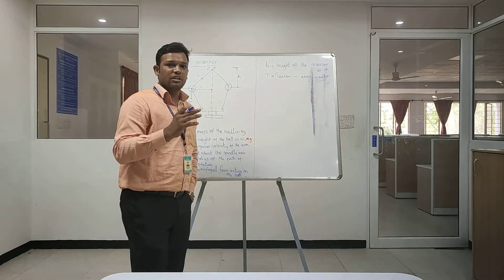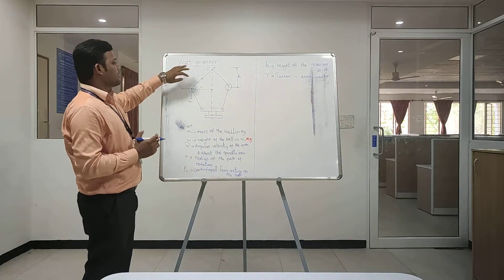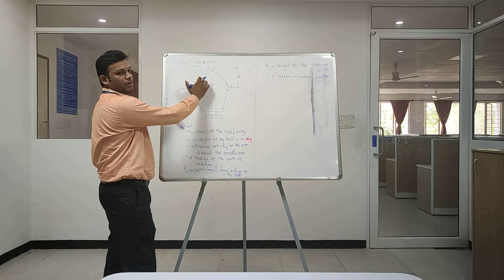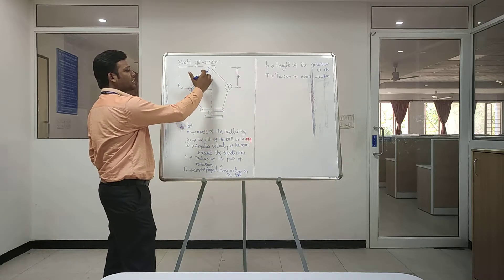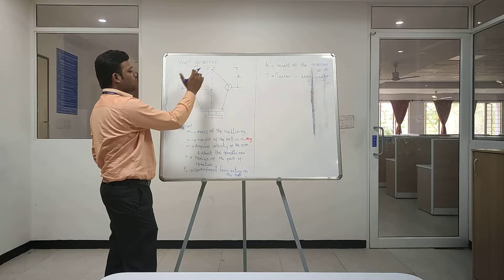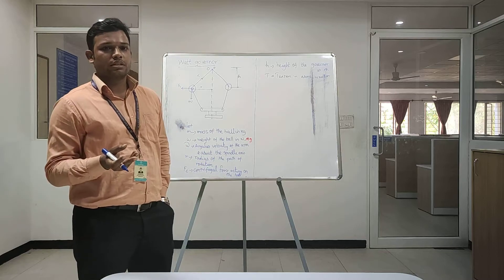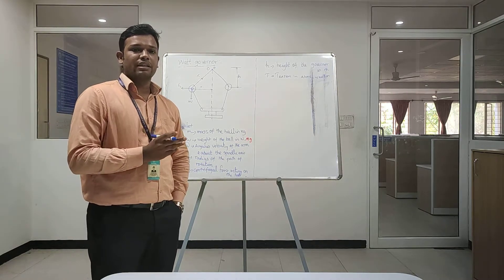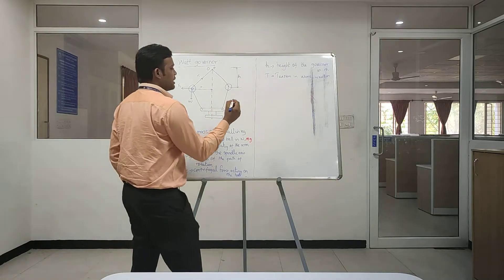It depends upon the speed of an engine. The next component is tension, tension which acts in the upper arm. When the governor rotates, there will be tension between the upper arm, the point O and Fc. Now we will see how to calculate the height of the engine. There will be a derivation by taking a moment at point O.